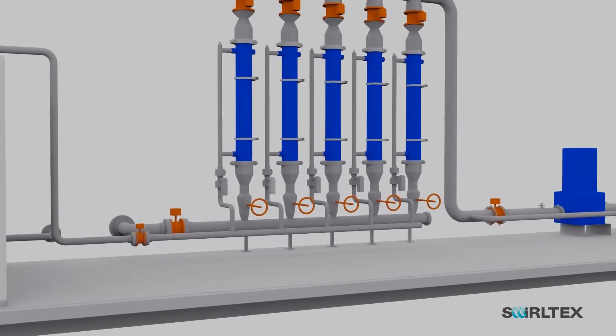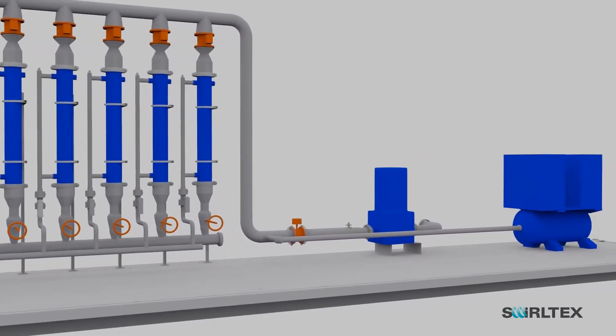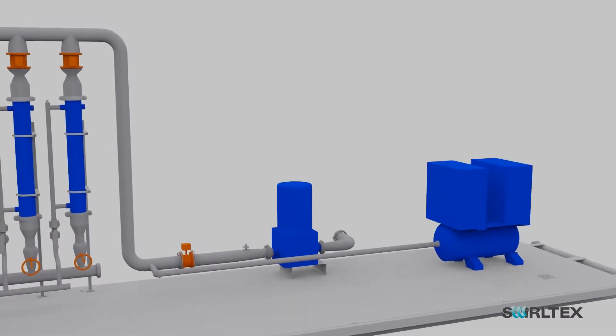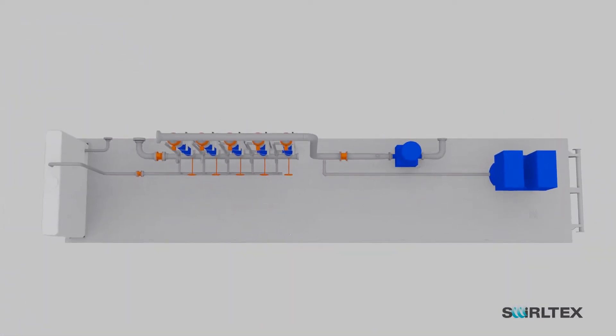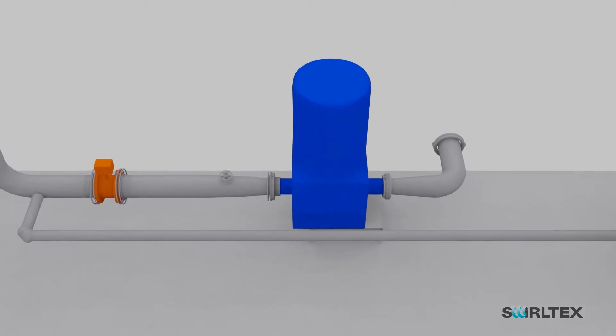The Swirltex system is designed to be compact to fit within a modular unit for ease of transport and flexibility. The influent process stream is pumped into the Swirltex system at much lower energy requirements than a traditional membrane system.